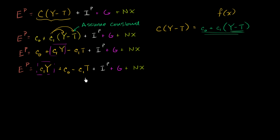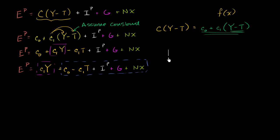So aggregate planned expenditures equals the marginal propensity to consume times aggregate income, plus everything else which is constant: c0 minus c1 times T, plus planned investment, government spending, and net exports. This might look like a really fancy, complicated formula, but it's actually pretty straightforward because we're assuming all of that other stuff is constant. So if you were to plot this, let's do that.